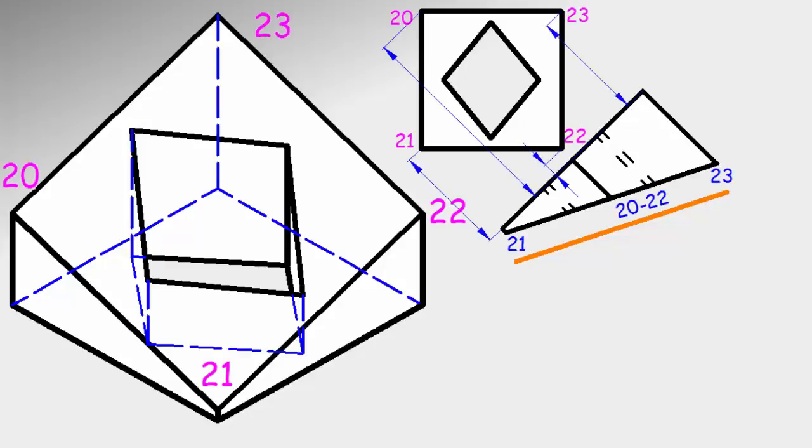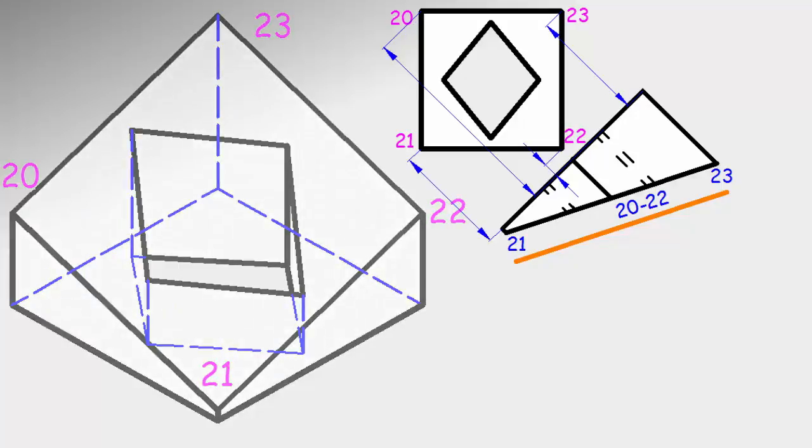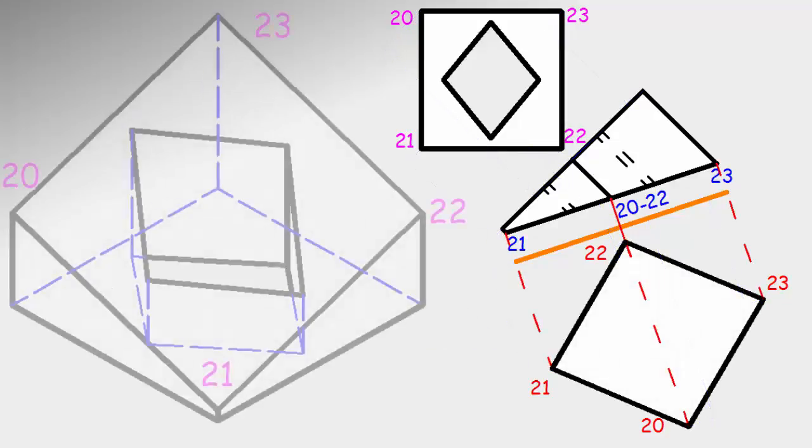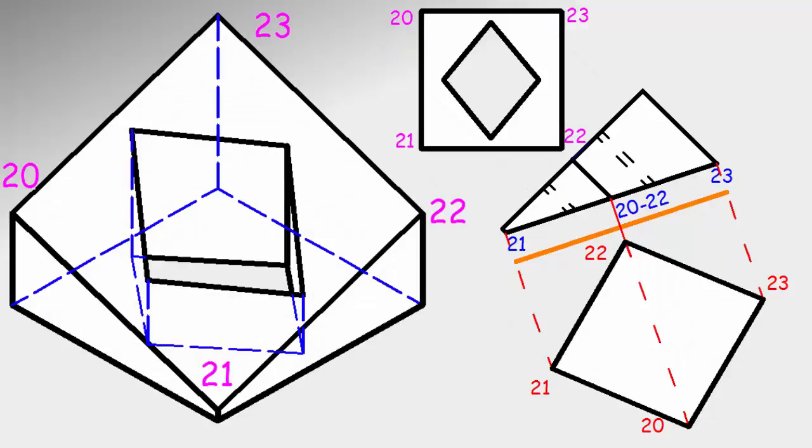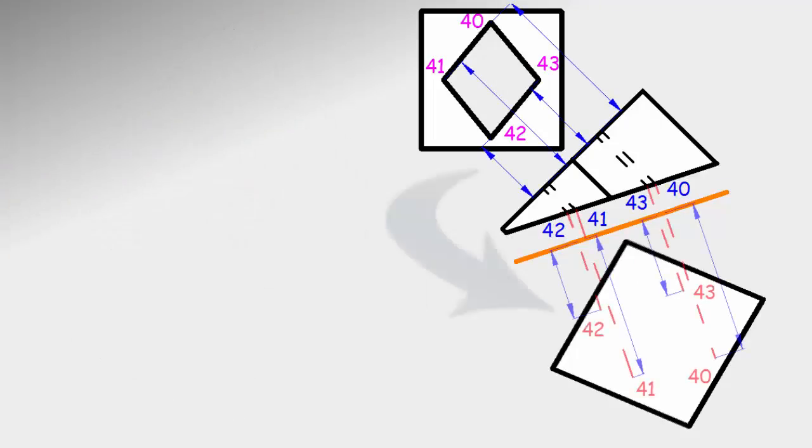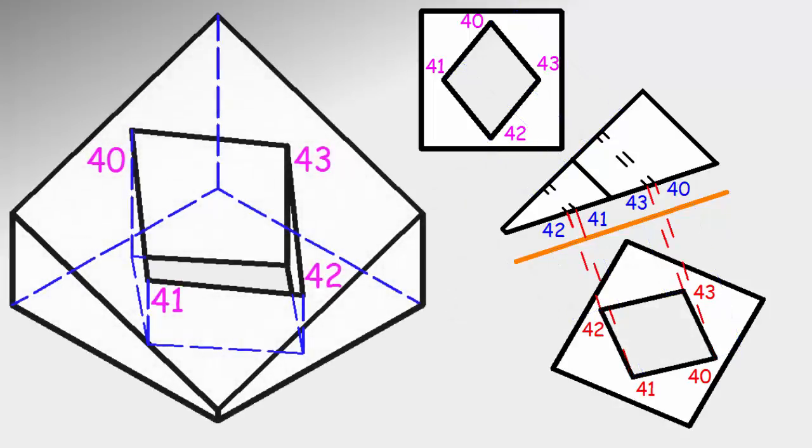The departure is measured on the ground with respect to the first reference line, and we take it to the second view perpendicular to the second reference line. Uniting them in the same order, we have the true shape of the oblique face. To complete this face we also take the vertices of the hole. Similarly we measure the departures and take them to the second auxiliary view. Joining them, we have the face with its true form complete.